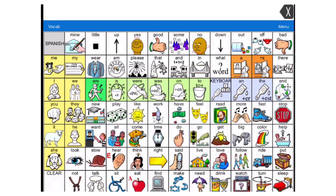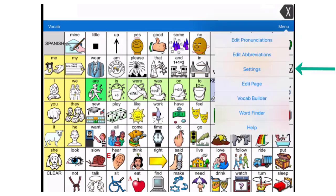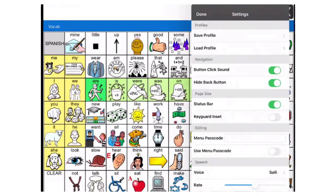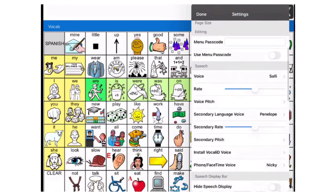To get started, select the menu button in the top right corner. Once you've selected menu, you'll select settings and notice the voice options in the speech menu.